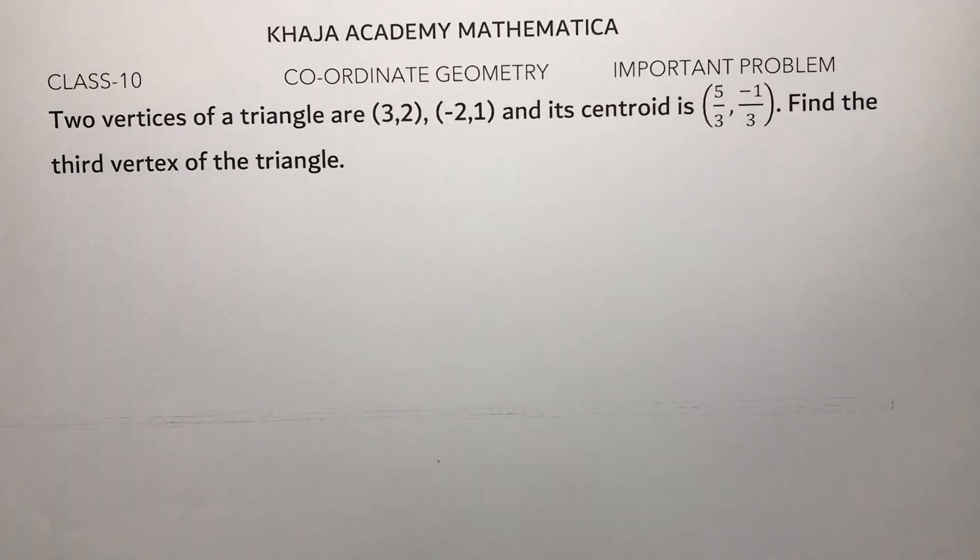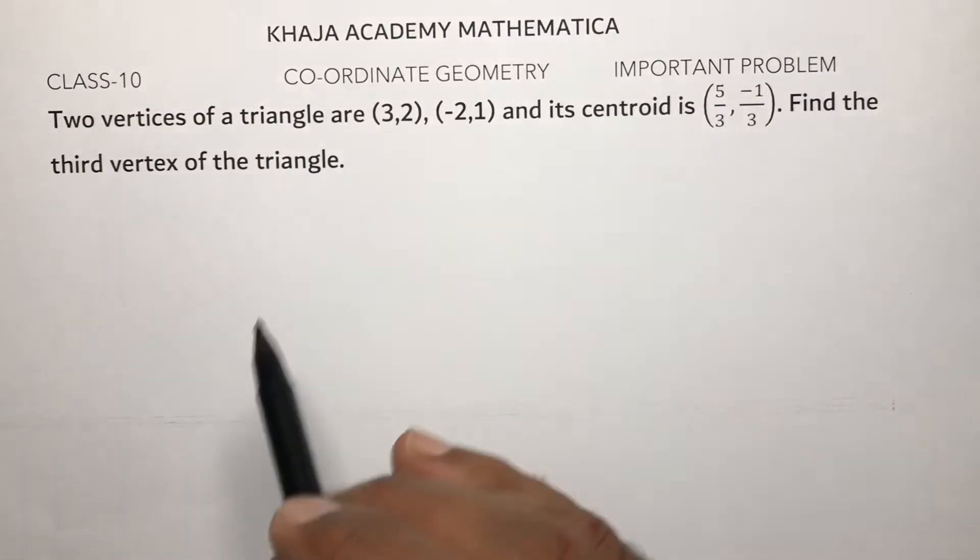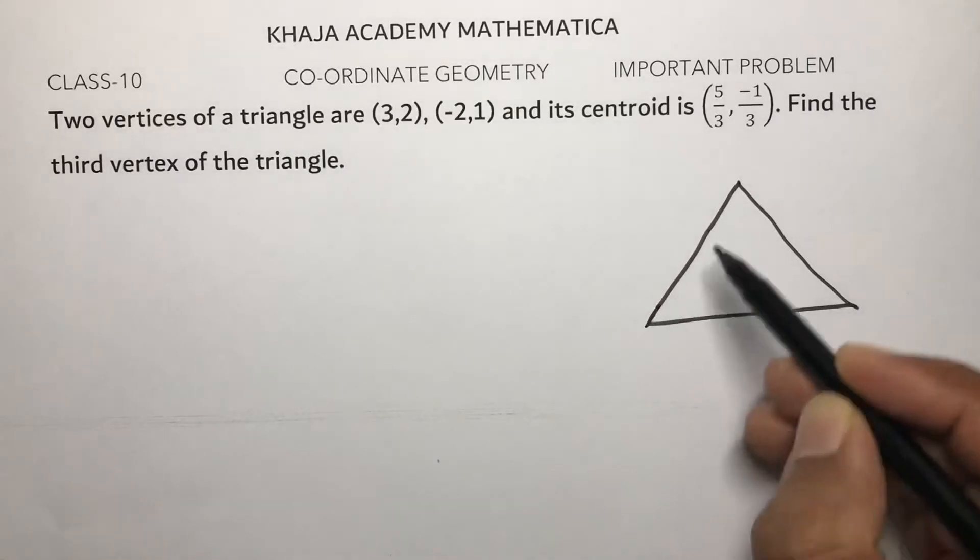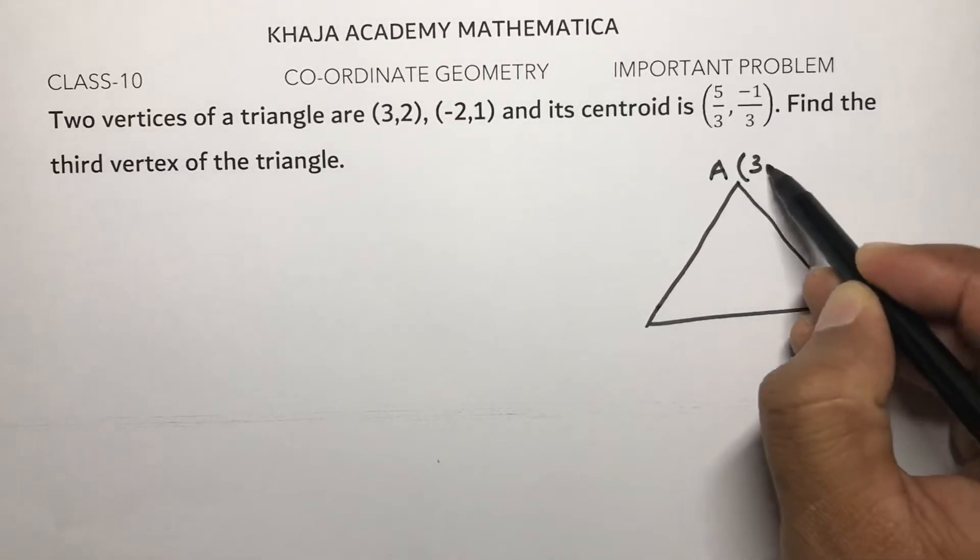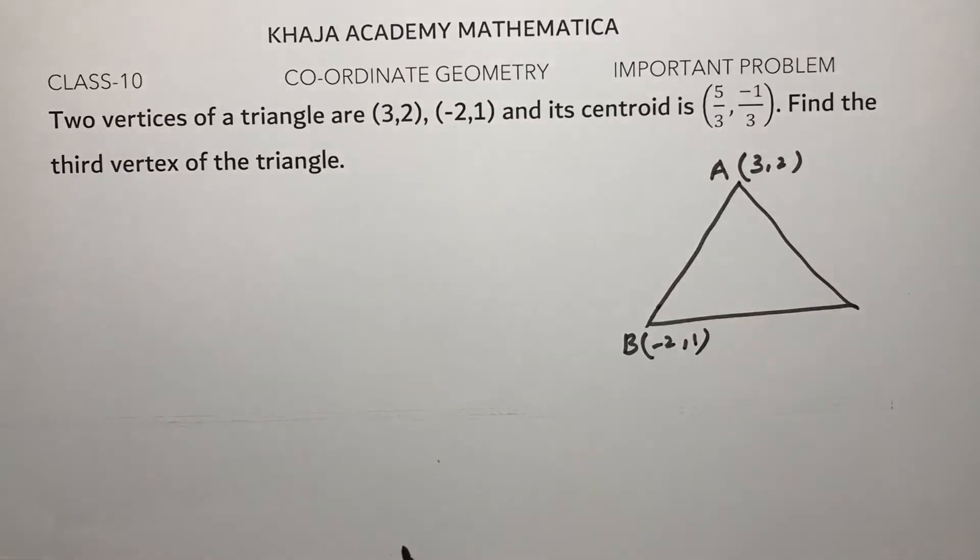One more important problem from coordinate geometry for Class 10. Two vertices of a triangle are (3,2) and (-2,1), and its centroid is (5/3, -1/3). Find the third vertex. So here centroid is given, two vertices are given.